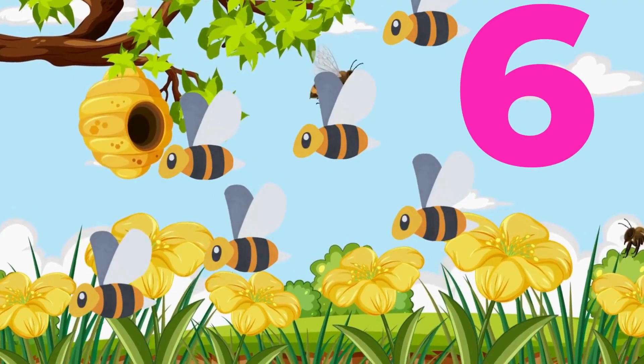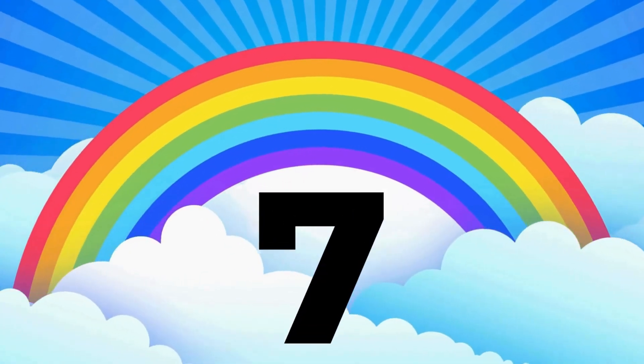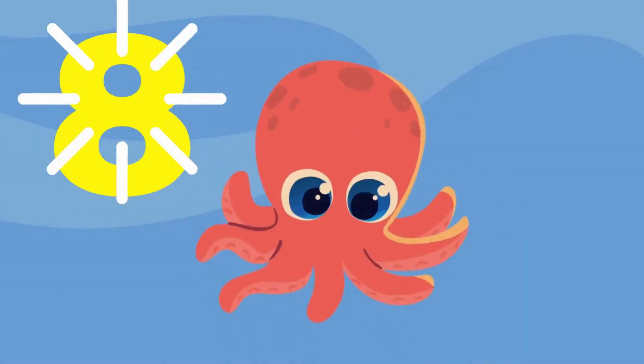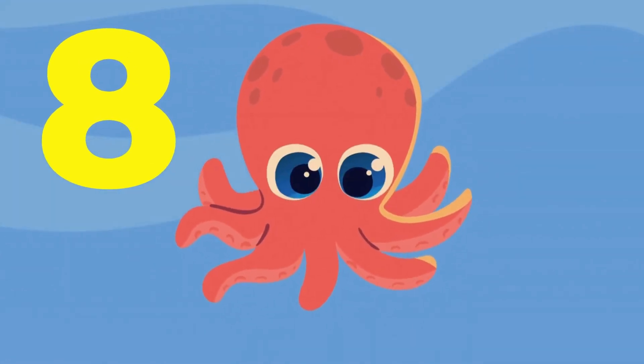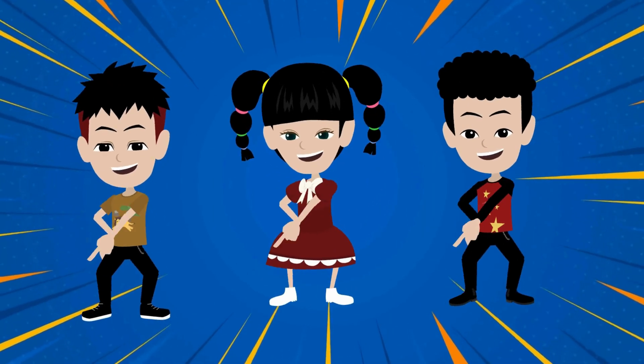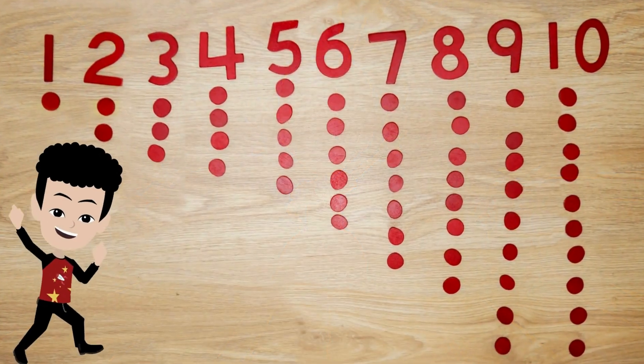Seven bright colors in a rainbow's hue. Eight octopus arms waving at you. Counting numbers, oh what fun! From one to ten, let's start at one.